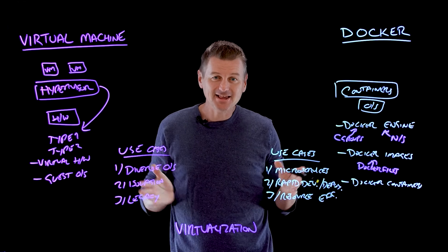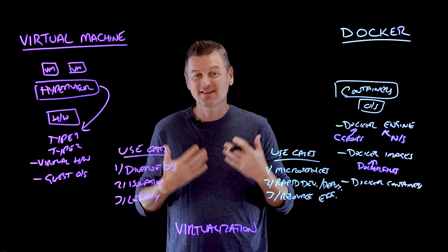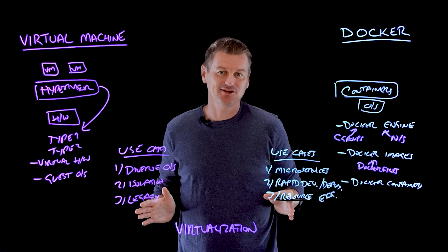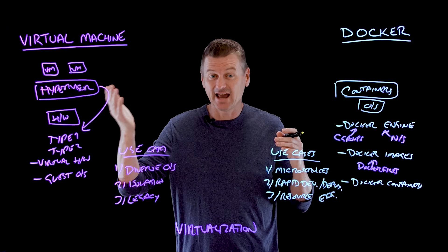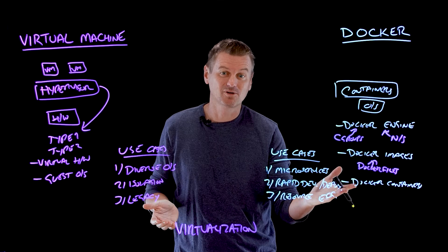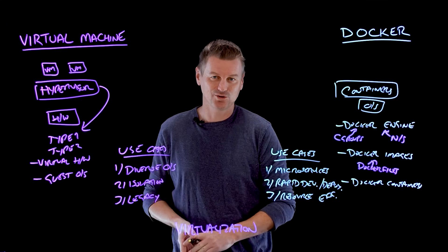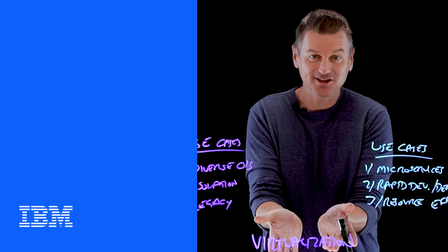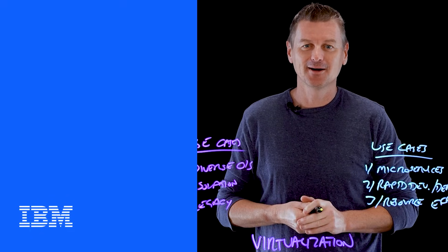In selecting between Docker and VMs, you'll need to consider the specific needs of your applications and infrastructure. It's common to see both technologies used in hybrid environments, where legacy applications might run on VMs and modern microservices-based applications use Docker containers. It's really not an either-or choice for organizations. These virtualization technologies have transformed the way we deploy and manage applications.